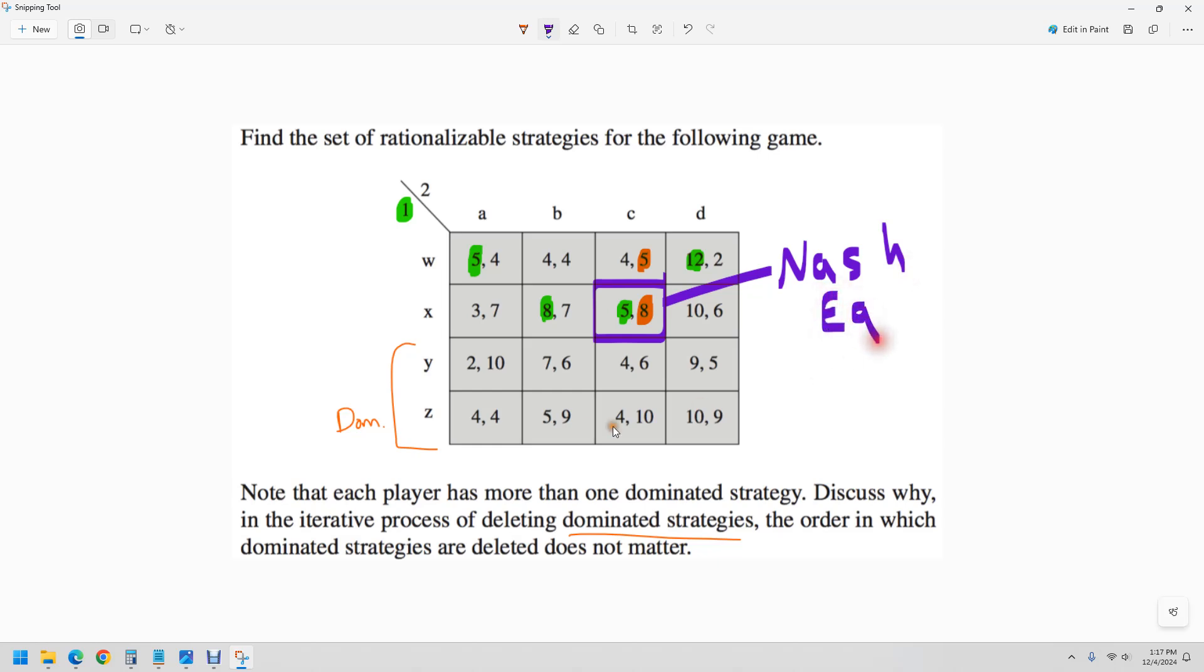In fact, that's actually the only one, because we can't have one down here. And so that would be Player 1 choosing X and Player 2 choosing C. That's why the dominated strategies don't matter, because that's where the Nash equilibrium is. But I'll finish the game.